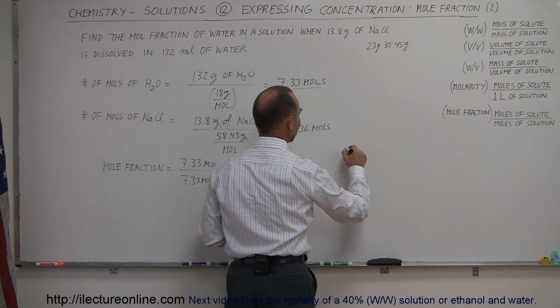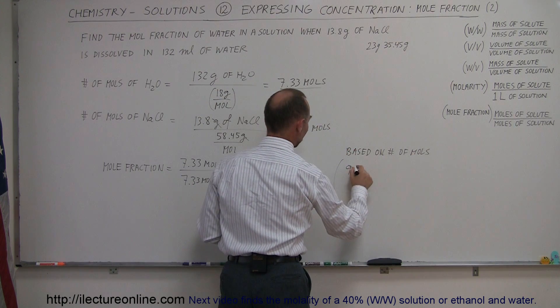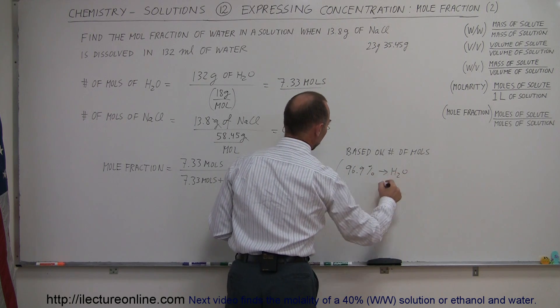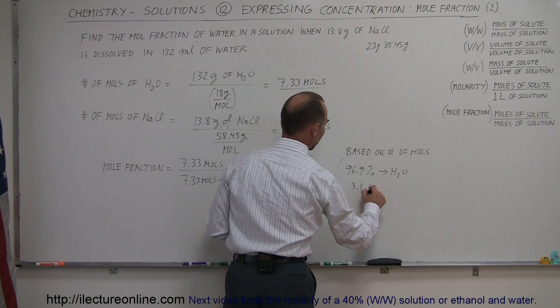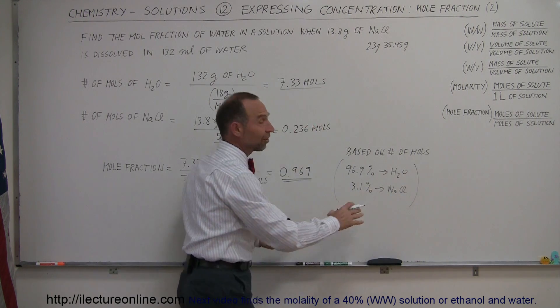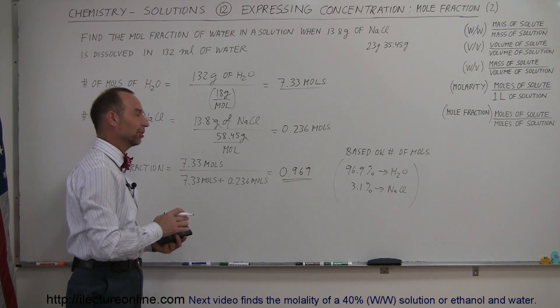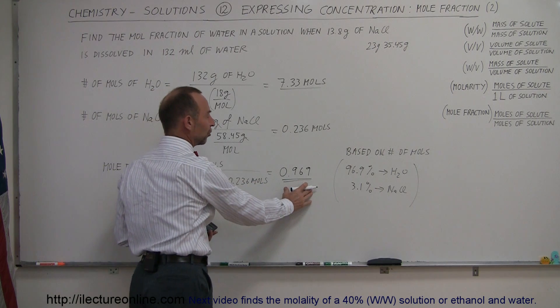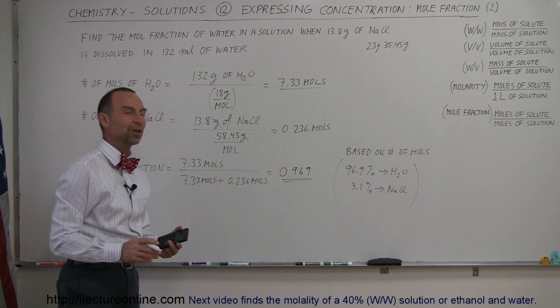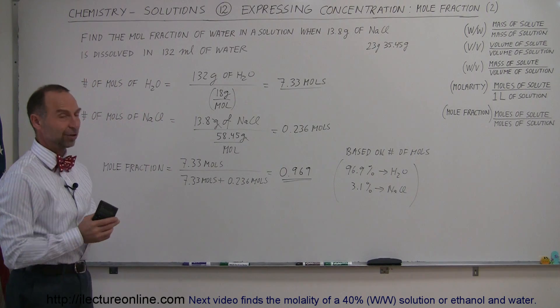Based on the number of moles, we can say that 96.9% is water and 3.1% is sodium chloride. This is not by mass, not by volume, but by number of moles, and that's how we call it mole fraction. The mole fraction of water to the solution is 0.969, or 96.9% of all the moles in the solution are water. That's what mole fraction means.